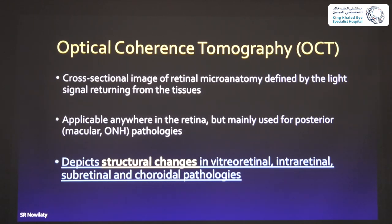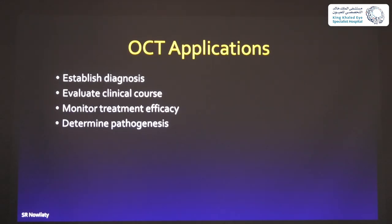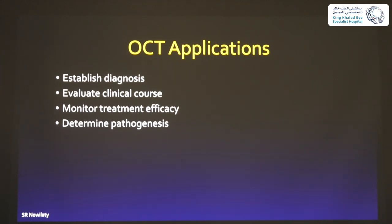OCT depicts structural changes in the vitreoretinal space or surface, in the intra-retinal tissues, in the sub-retinal tissues, and also in some of the choroidal pathologies if you go deep enough. It's a structural examination — not a dynamic exam like fluorescein angiography — that shows you the anatomy. It helps establish diagnosis, evaluate clinical course of certain diseases, monitor treatment, determine pathogenesis, and sometimes the etiology of diseases.